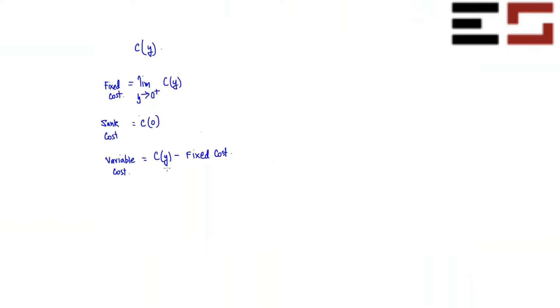That's the variable cost. So these are the definitions. So now let me ask you suppose the cost function is like this. It is 4Y plus 80 if Y is positive and it is 40 if Y is 0.